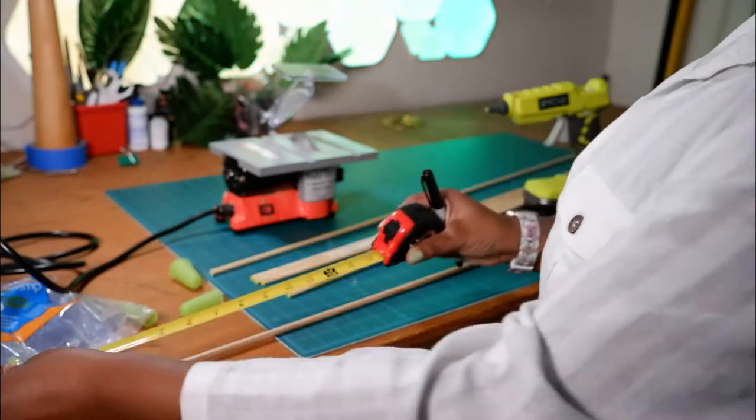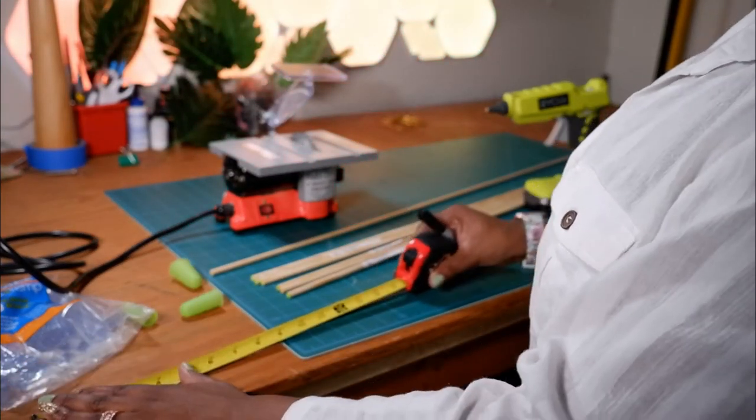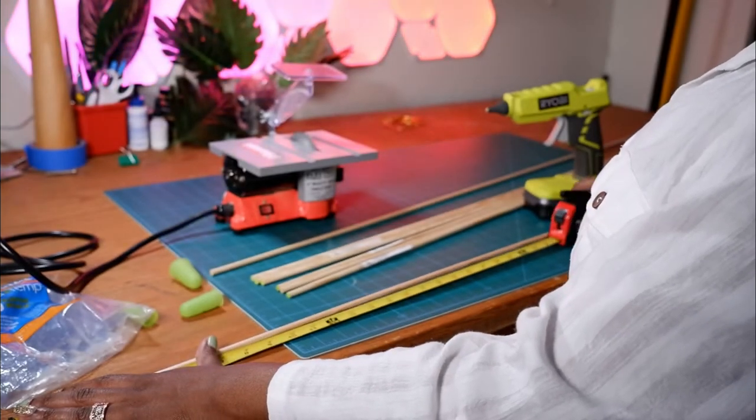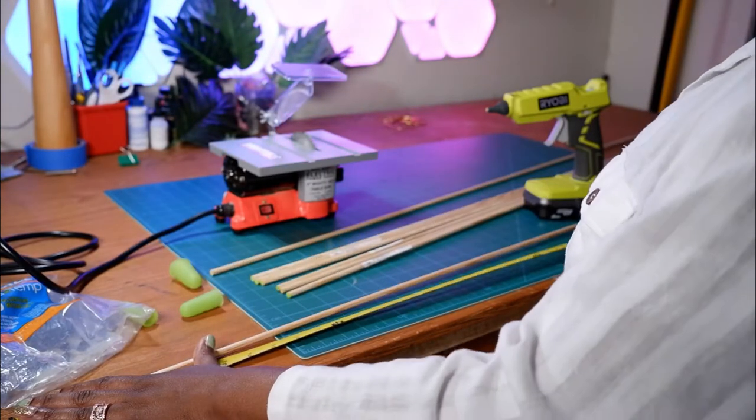Next, you're going to measure out your dowels at two feet. At this point, also make sure that you are heating up your glue gun.